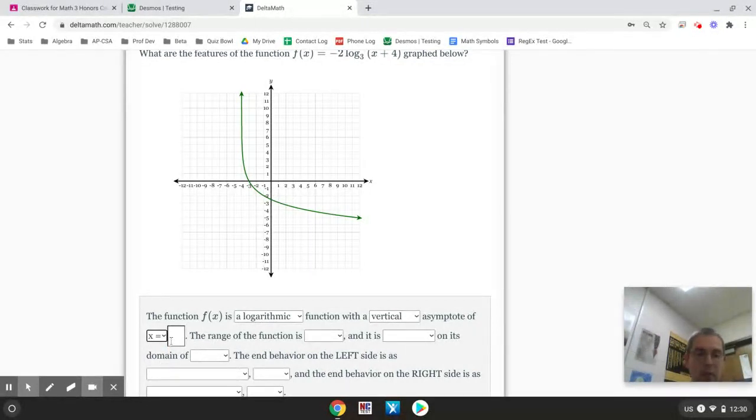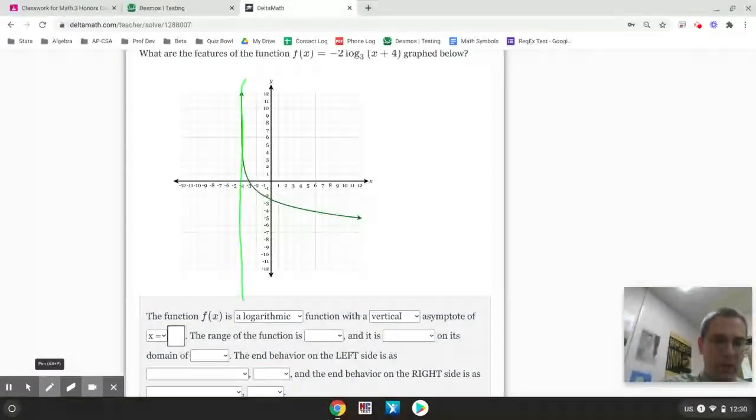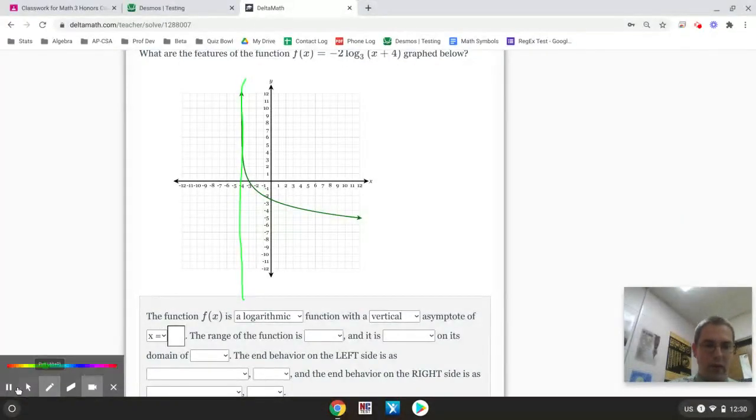And then we pick the value where it looks like that graph is touching but not crossing. So, if you look, this steep part of the graph is right there at x equals negative 4. So, that is going to be the equation of the asymptote. Just take it very slow, one at a time.